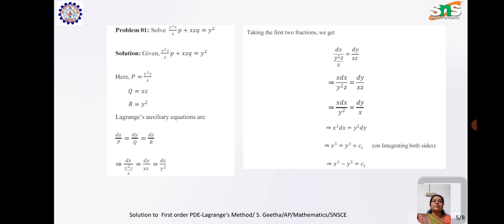Which implies dx/(y²z/x) = dy/(xz) = dz/y². Taking the first two fractions, we get dx/(y²z/x) = dy/(xz), which implies x·dx/(y²z) = dy/(xz).